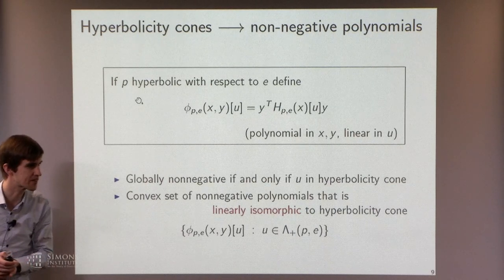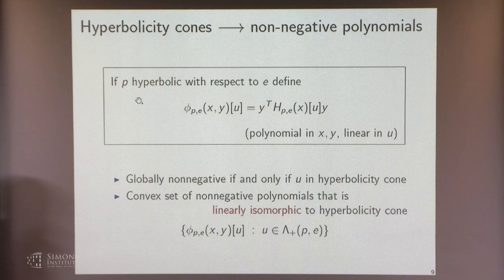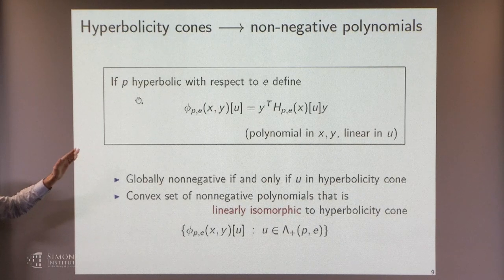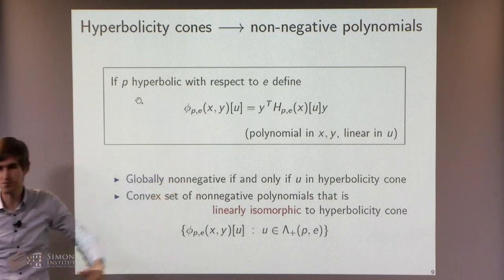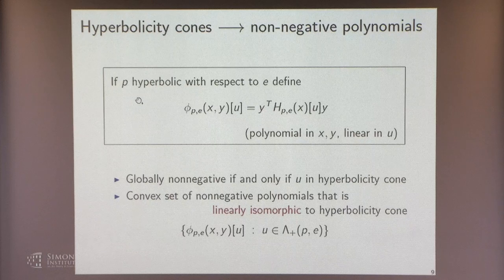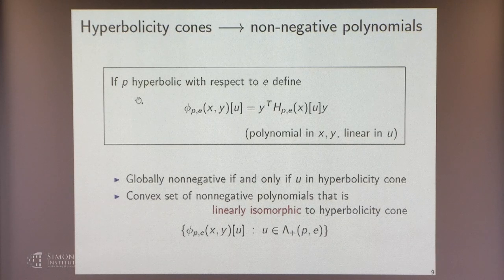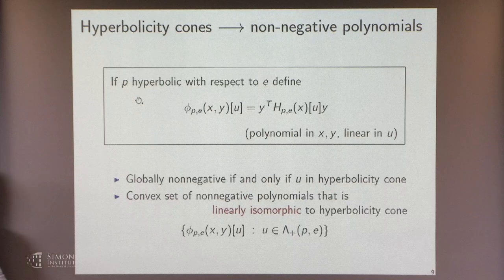Since these are globally non-negative polynomials, I can produce more non-negative polynomials by composing with polynomial maps first. That might seem unusual, but it's really what we do with sum of squares: we start with non-negative quadratic forms, compose with a moment map or similar, and get a much bigger family of non-negative polynomials. That's the precedent for what I'm about to do next—introducing a bigger machine to produce non-negative polynomials.